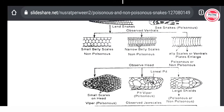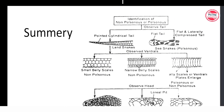So summarizing the identification tools for poisonous and non-poisonous snakes: first, observe the tail — a pointed, cylindrical tail indicates a land snake and is likely poisonous; a flat, laterally compressed tail indicates a sea snake, which is also poisonous. Second, observe the ventral scales — small belly scales or narrow belly scales indicate non-poisonous; enlarged ventral plates may indicate poisonous.